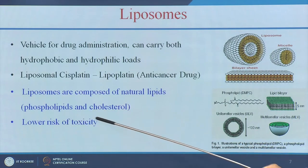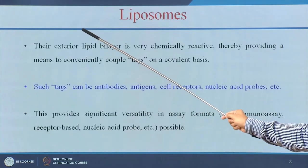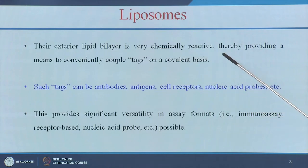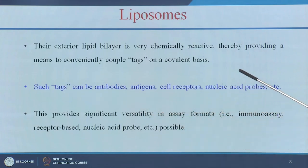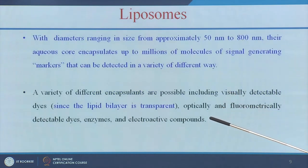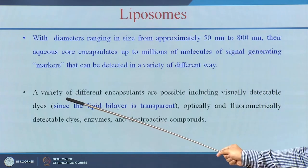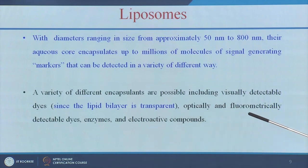Liposomes are made up of natural lipids, so they have a lower risk of toxicity, and they can carry both hydrophobic and hydrophilic drugs. An important property is their exterior lipid bilayer, which is chemically reactive — we can tag antibodies to target liposomes to cancer cells specifically. Their size can vary from 50 to 800 nanometers, and the lipid bilayer is transparent, allowing use of fluorescent materials for imaging and diagnostic applications.